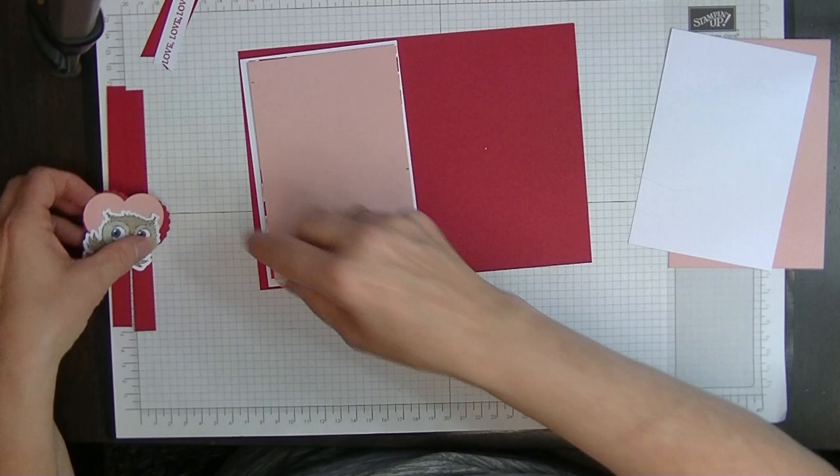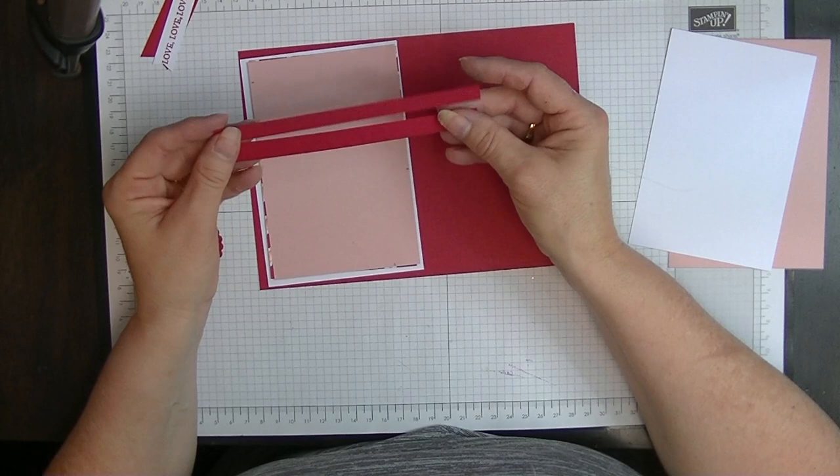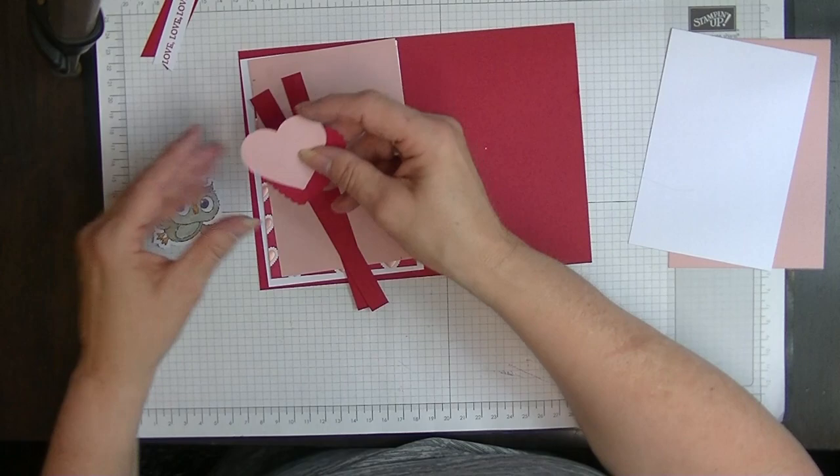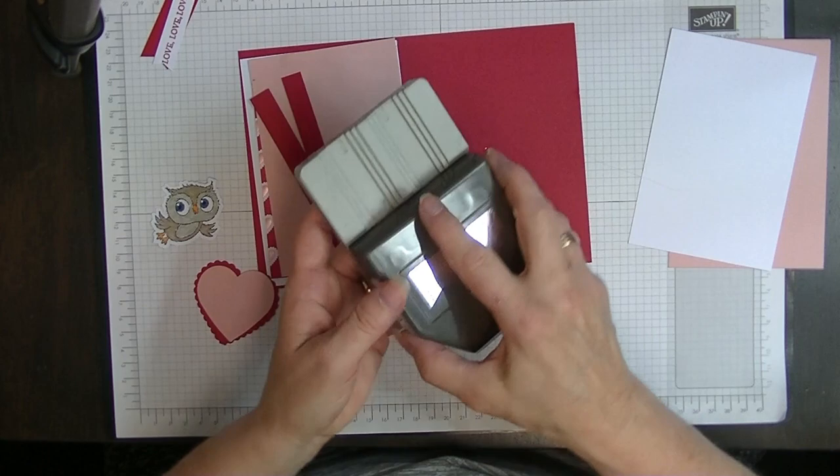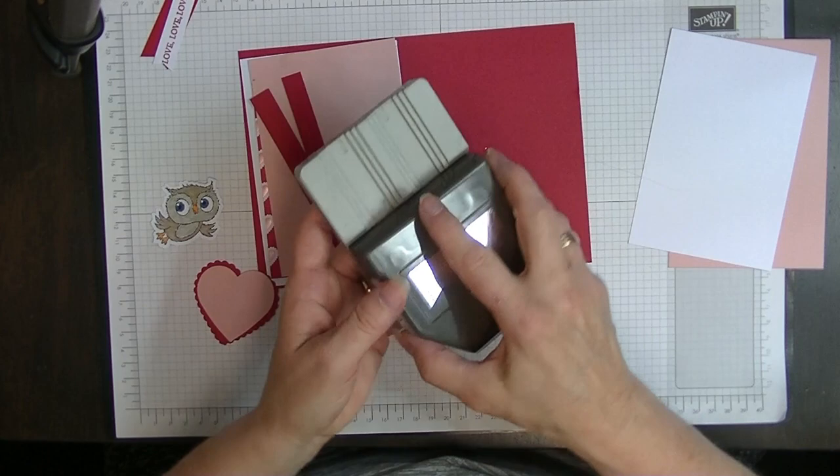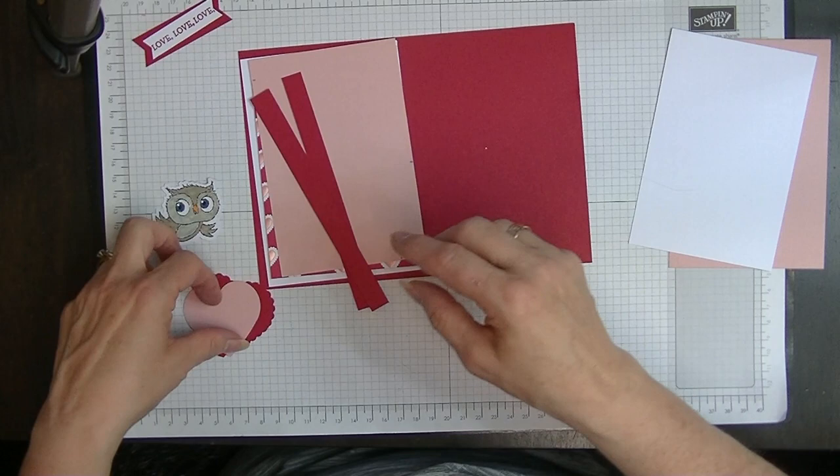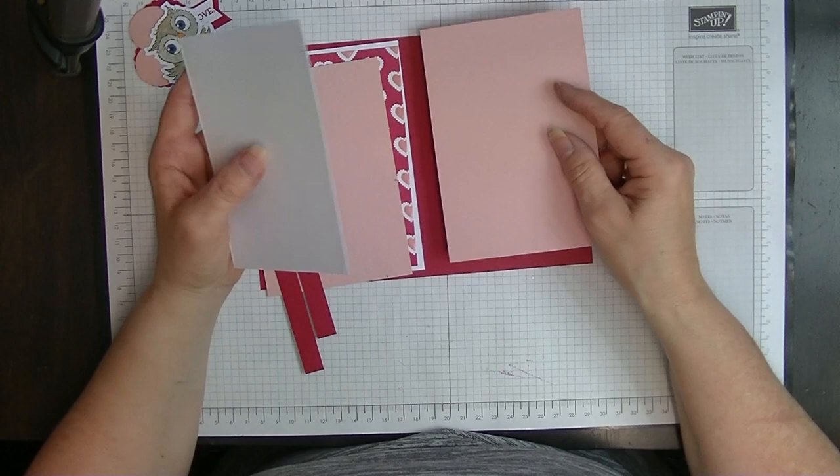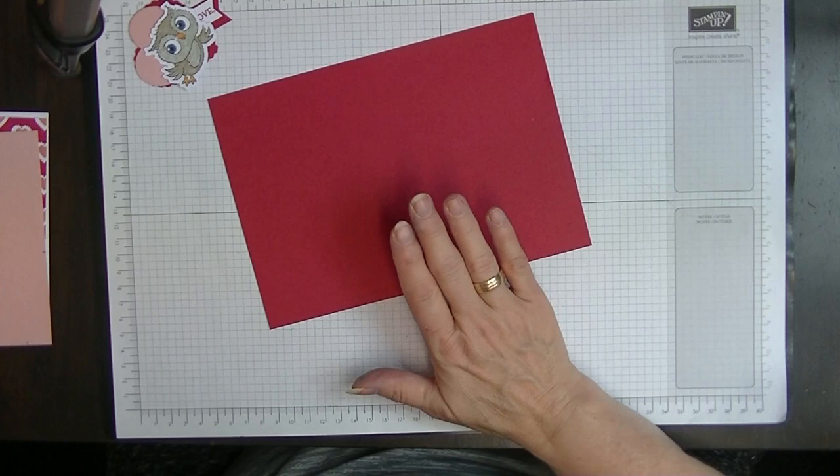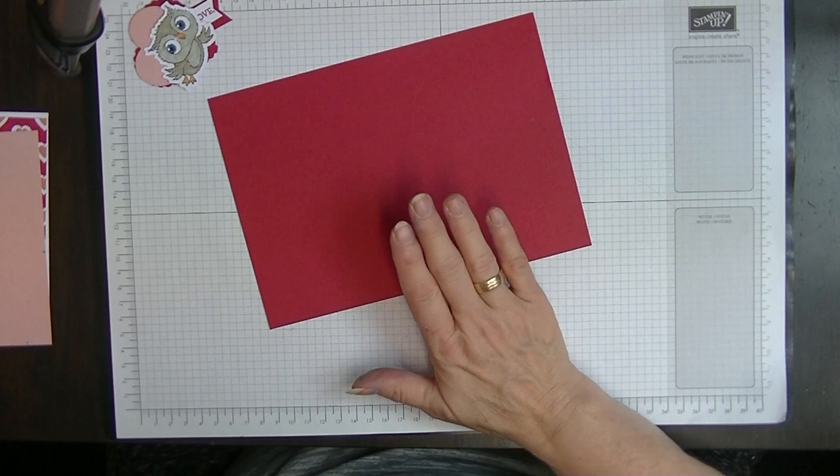My top layer is the same size as the DSP layer, 5⅜ by 3⅝. You'll need 2 pieces that are approximately 6 inches long by ½ inch wide. I'm using the Heart Punch Pack and the pick-a-punch banners. For the inside we need a piece that measures 5⅝ by 3⅞ and another white piece that measures 5⅜ by 3⅝.